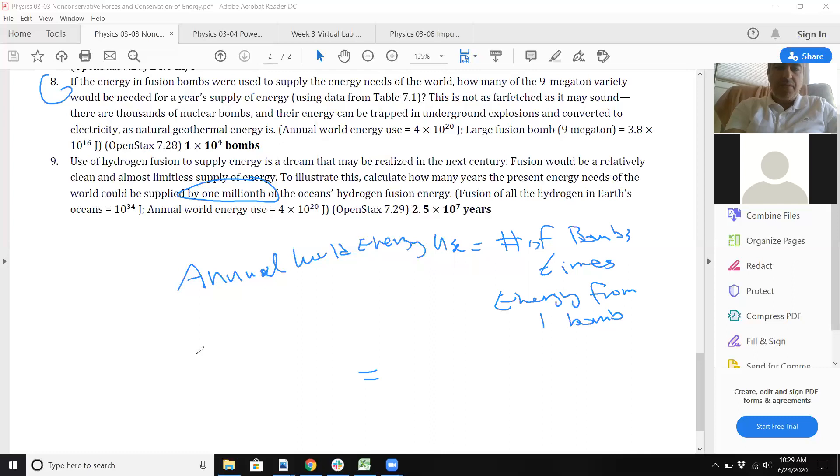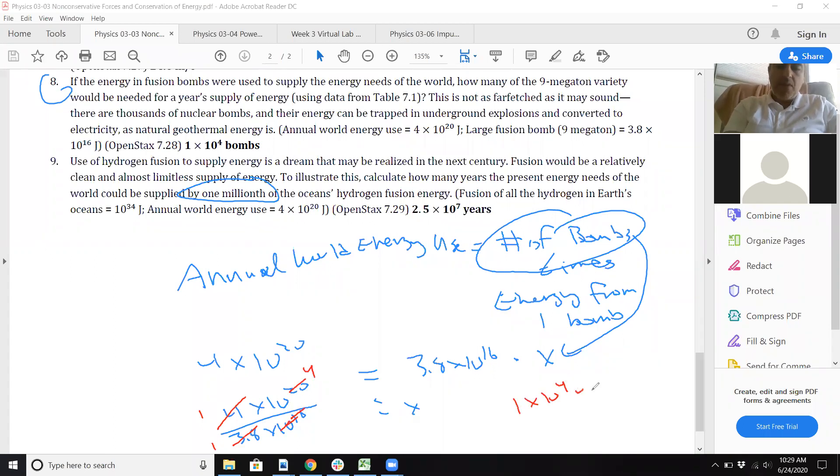So that's just 4×10²⁰ equals 3.8×10¹⁶ times X, where X is the number of bombs. So it's 4×10²⁰ over 3.8×10¹⁶. The ratio is roughly one to one, and you can subtract the exponents here, so that just goes away and that becomes four. That's why it's 1×10⁴, or roughly 10,000 bombs.